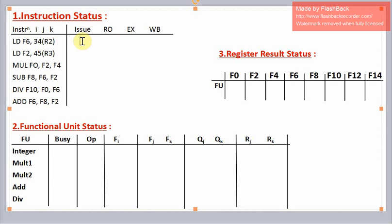In clock cycle number 1, the first load instruction will be issued. So the integer unit will now be busy. The operation to perform is load. The destination register is f6 and the source register is r2. Since this source register is available, the flag representing r2 will be yes. Now this integer unit is going to write f6, so we represent it in the register result status.